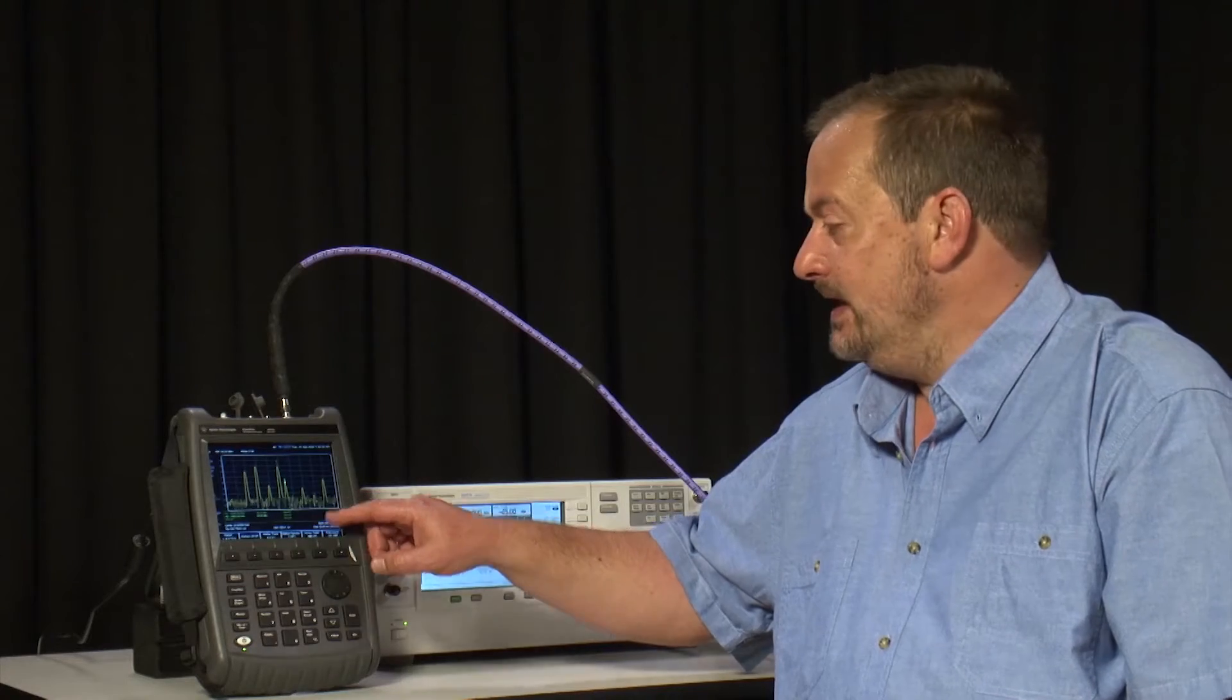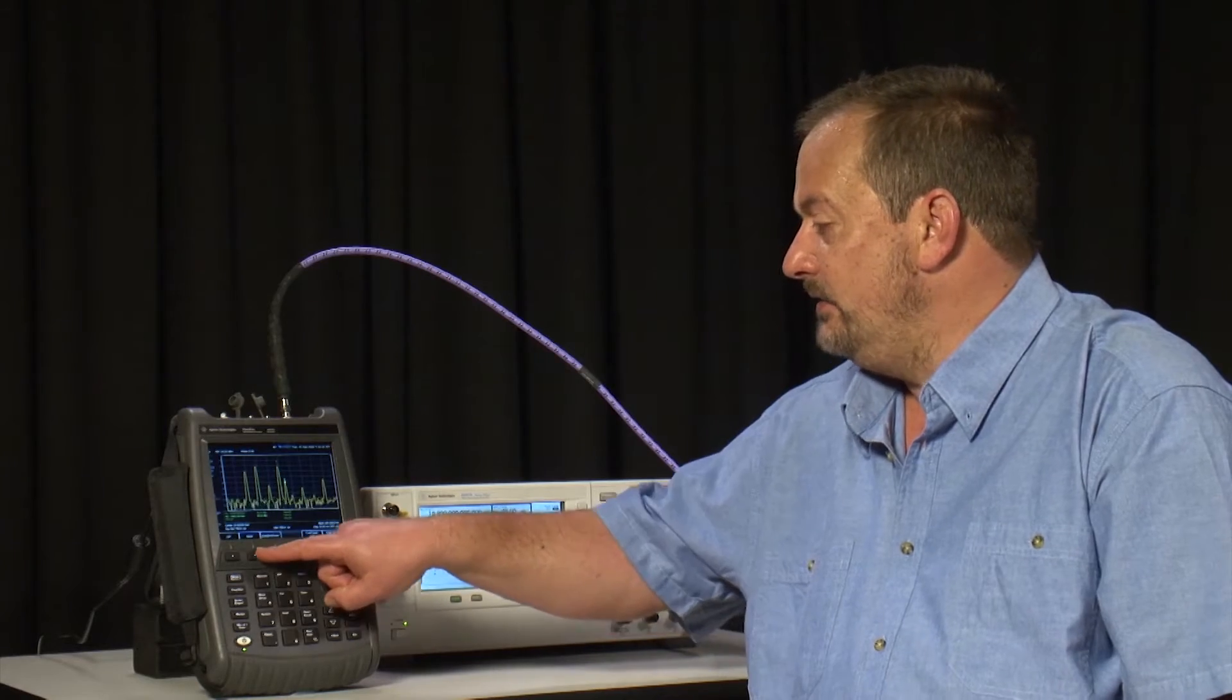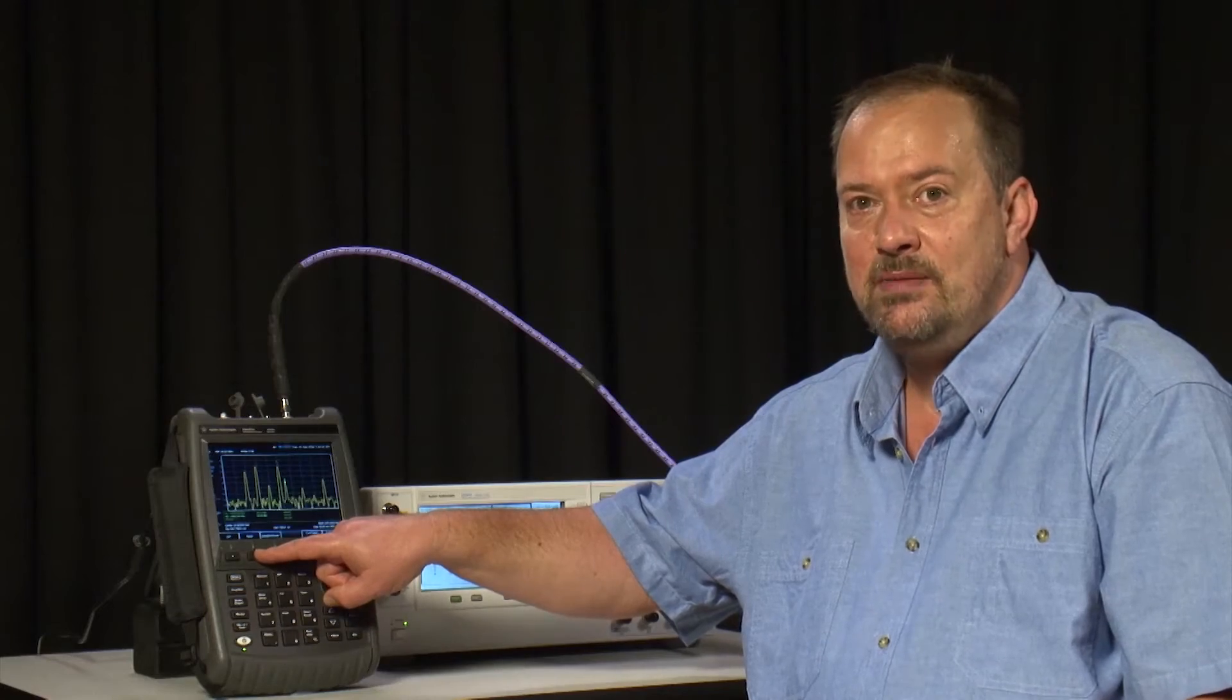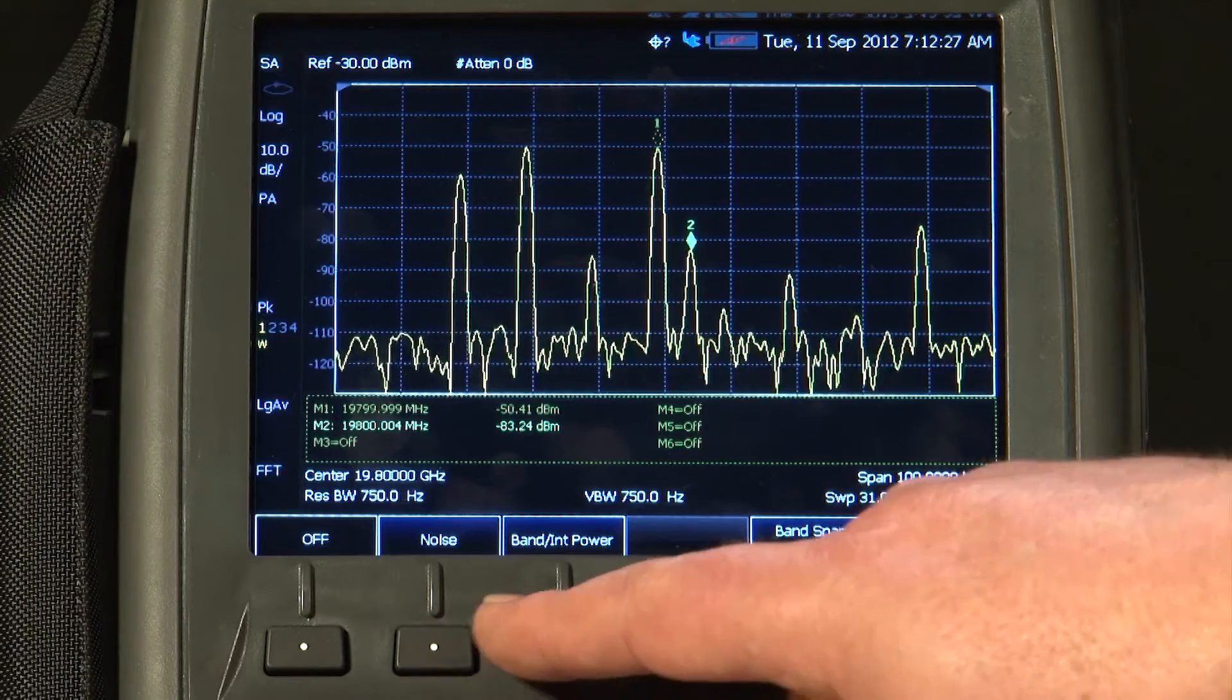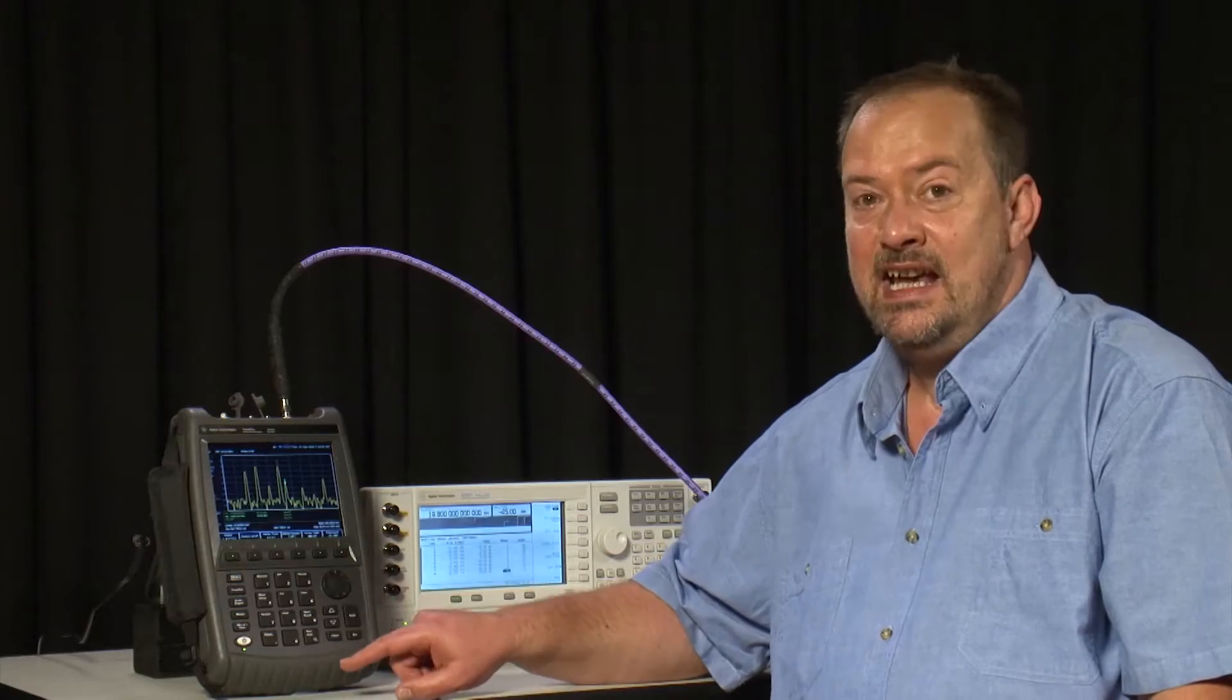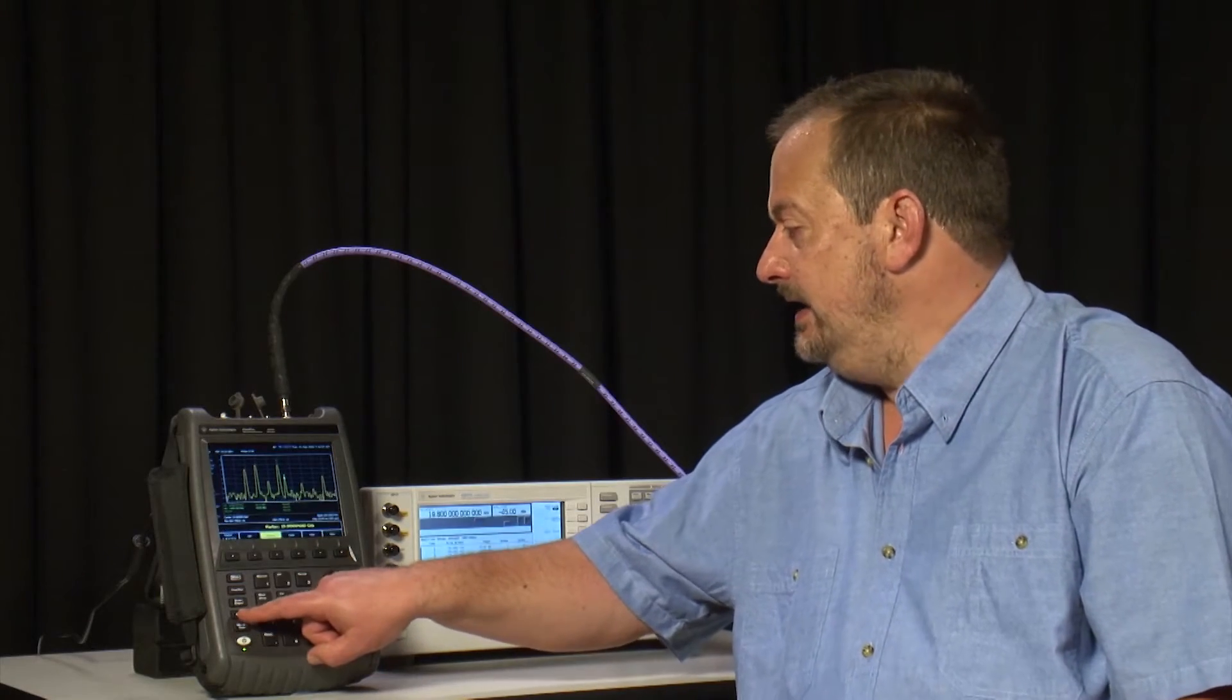Now as you saw previously, we also have marker functions. We have the noise marker function, which we use to make a normalized measurement to a 1 Hz bandwidth. There is also a band or interval power marker, and we have even got a built-in frequency counter.